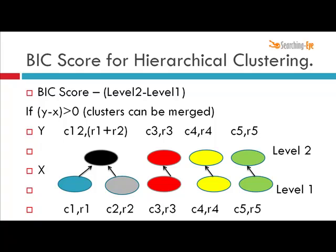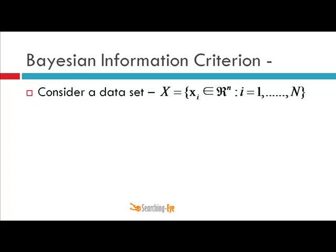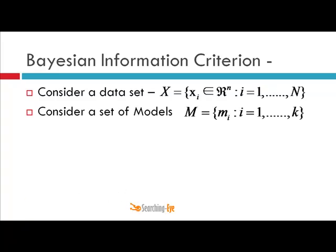In exact mathematical terms, consider a dataset X with N points, where each x_i is an n-dimensional feature vector. We have a set of models M — from M1 to Mk — each with a different number of parameters. In a regression problem, model M1 has one parameter and model Mk has k parameters. The goal is to identify the best model, i.e., the appropriate number of parameters for your regression problem.